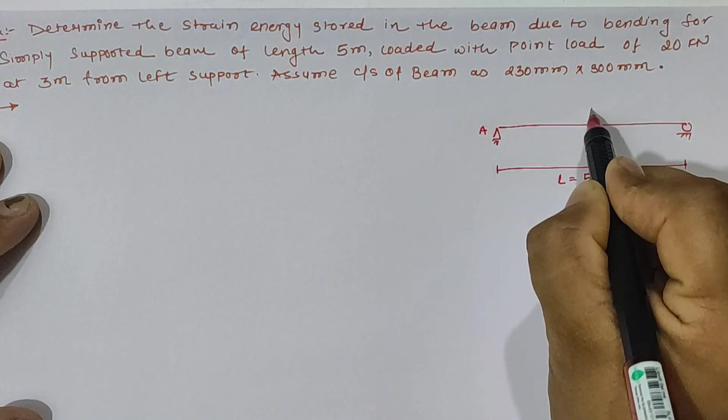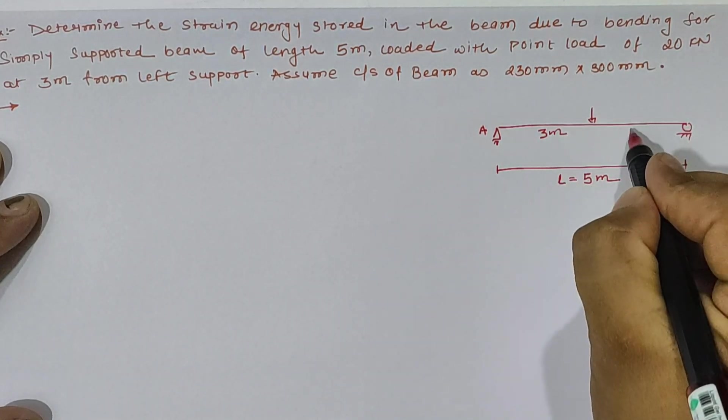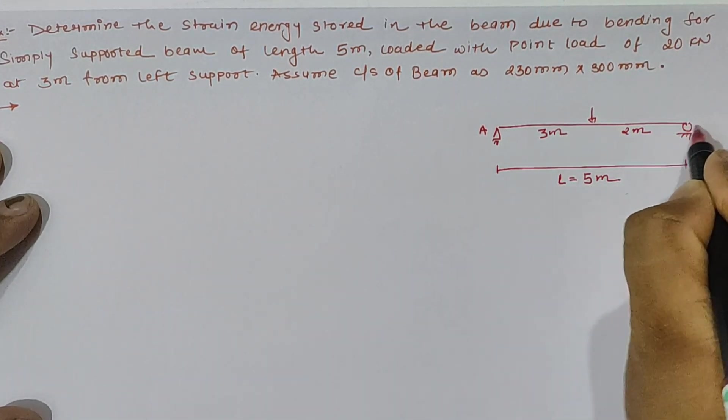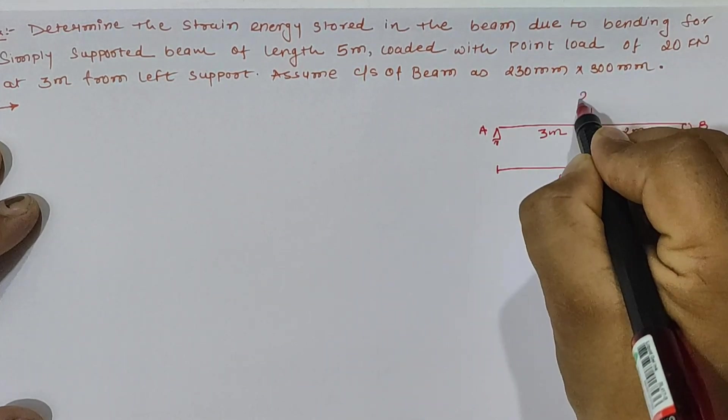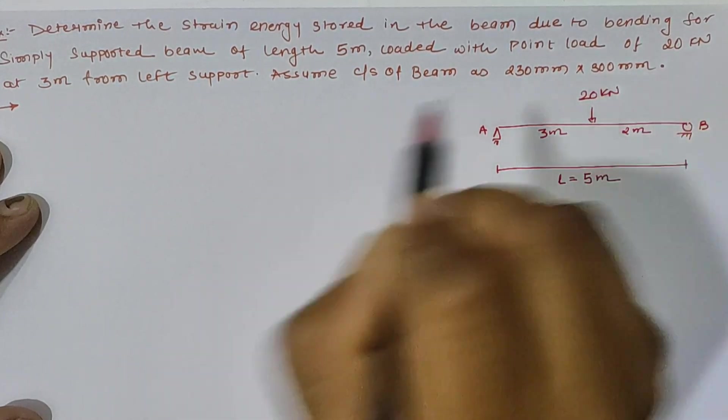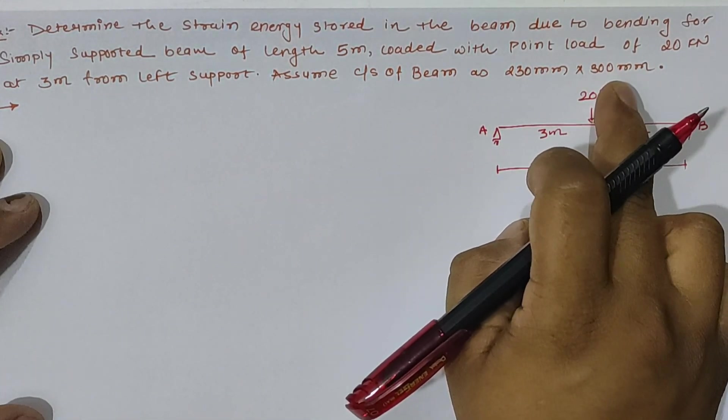So from support A, our point load is given at distance 3 meter and total distance is 5, hence from support B it is at 2 meter and load is given as 20 kN. We have given cross section of the beam as 230 mm x 300.